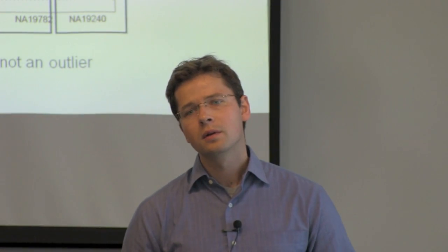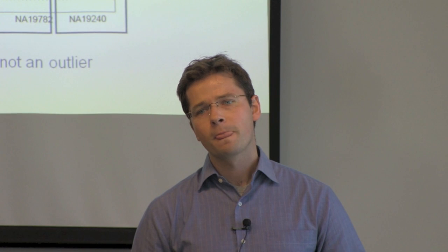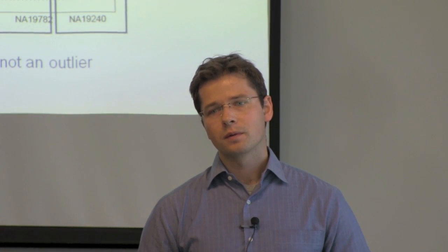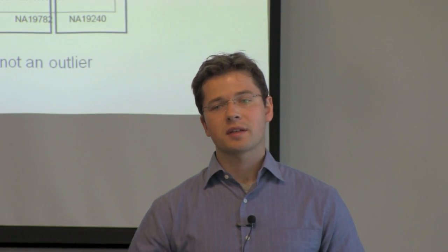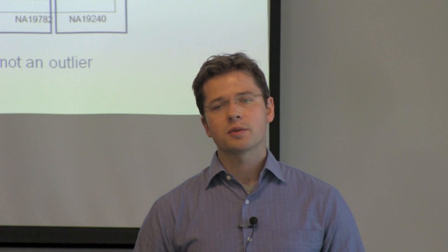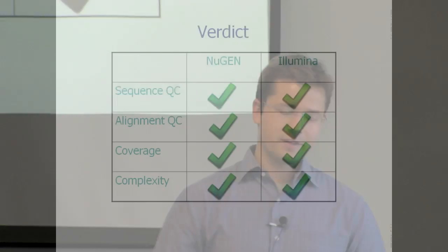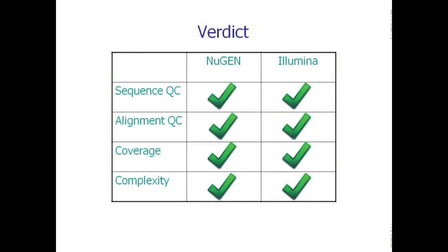Do you think the slightly higher duplication rate could be due to the fact that the ultra-low system was using 50 nanograms of input and the Illumina system was using several micrograms — one to five? Yeah, so there's a big difference in input. It's not actually surprising that you would see a higher duplication rate. Essentially every QC parameter that I looked at, I think NuGen has exceeded my expectations. You can drastically reduce your input and still see all of the sequencing benefits that are on the market today.